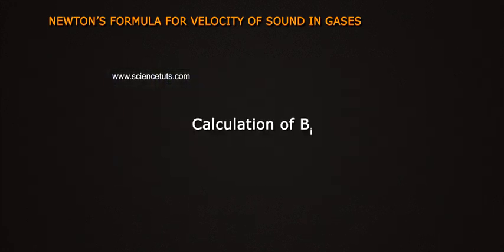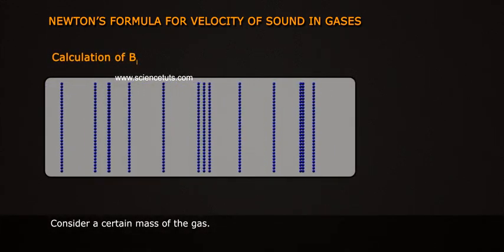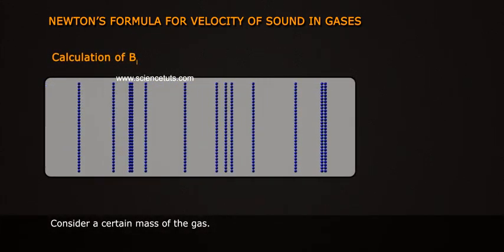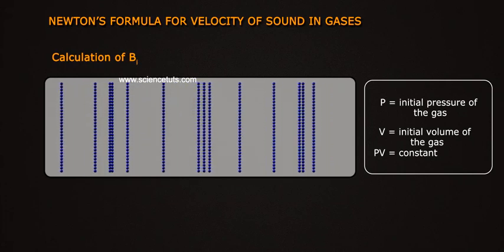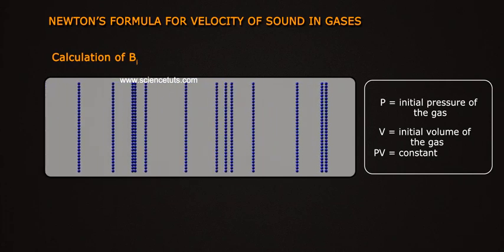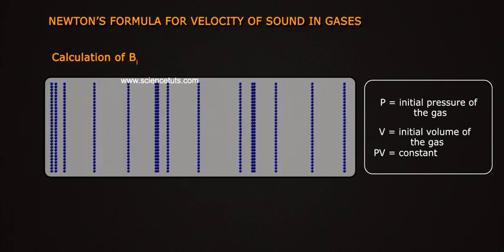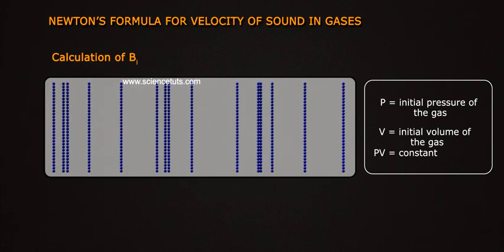Calculation of b_i. Consider a certain mass of gas. Let p equal the initial pressure of the gas and v equal the initial volume of the gas. Under isothermal conditions, PV equals constant.